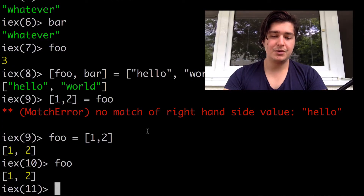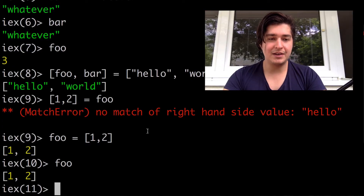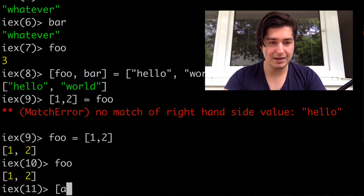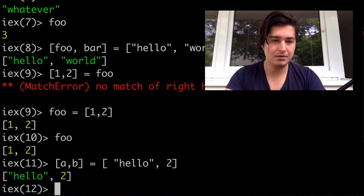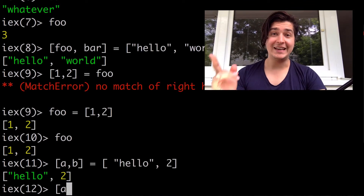So something else you can do — you can match and it doesn't even have to be the same type. So if I do A, B, that can equal to hello, and so on. But then it gets really fun because you can do stuff like matching a list inside of a list.